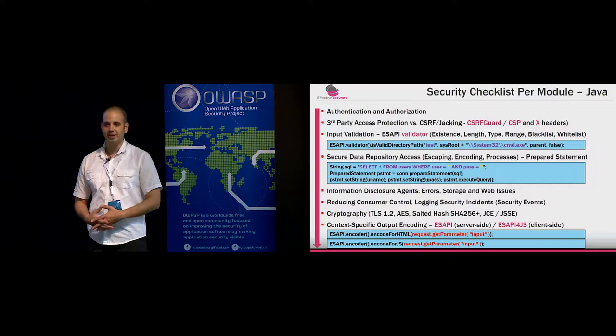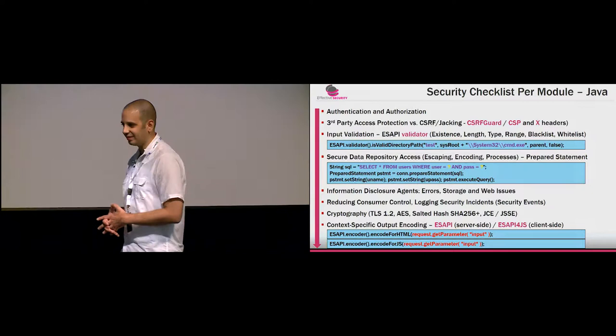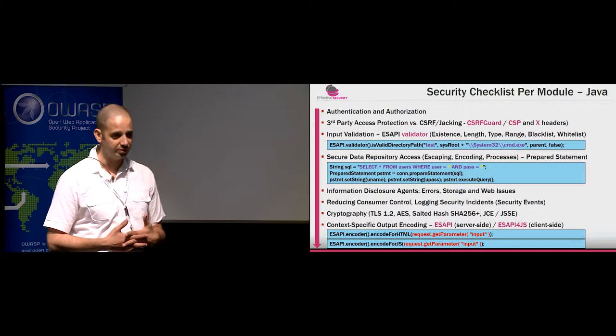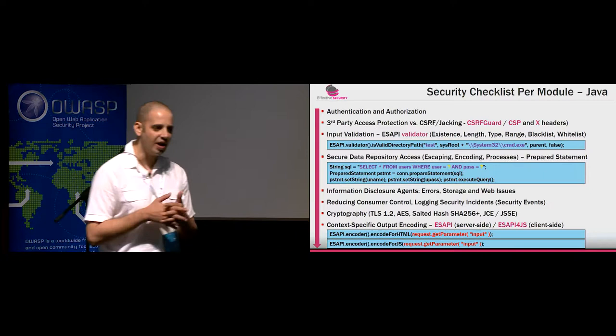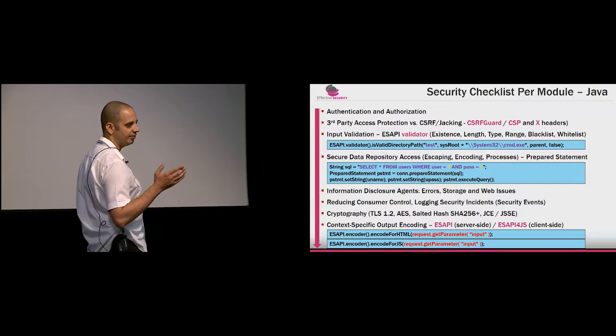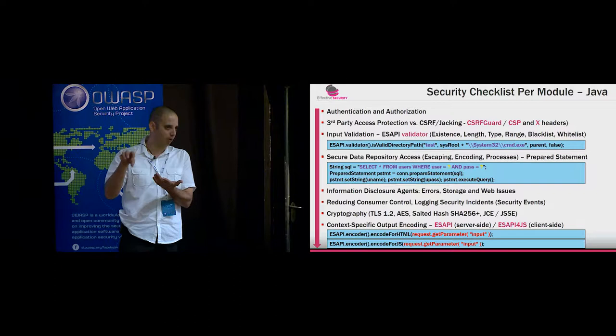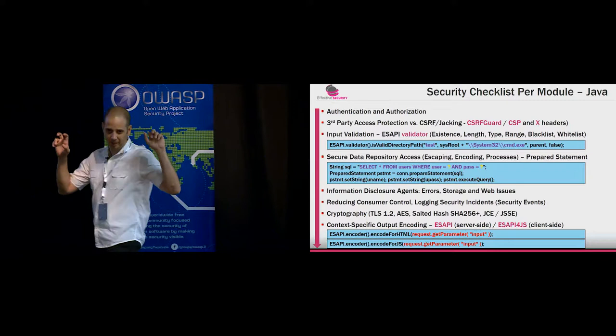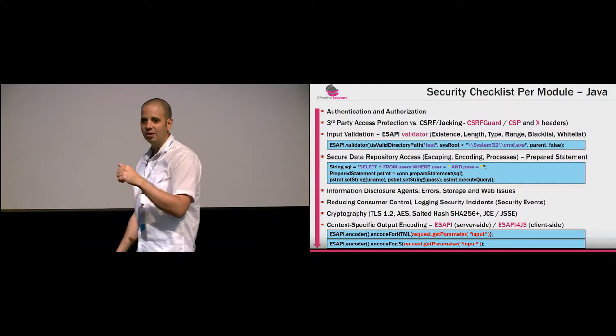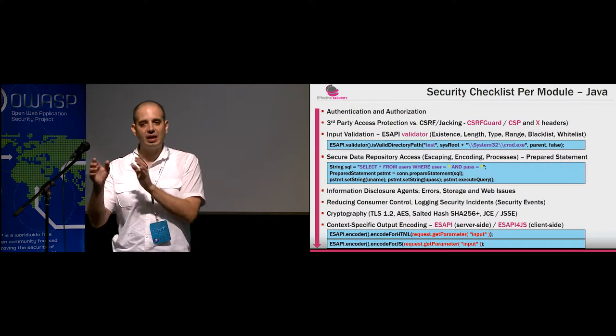A web page should begin by verifying the authentication and authorization — access control — of the accessing user. It doesn't matter how you do it: a flag in the session, verifying a cryptographic token, verifying a JWT token in a header. As long as you immediately, before everything else, verify the user is authenticated and authorized to access that specific module. This doesn't apply for public pages like the login page or the help page, but it applies for every internal component.